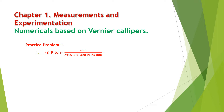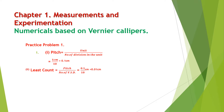Pitch is equal to unit over number of divisions in the unit. The unit is one centimeter and the number of divisions in the unit is 10, so the pitch comes to be 0.1 centimeter.